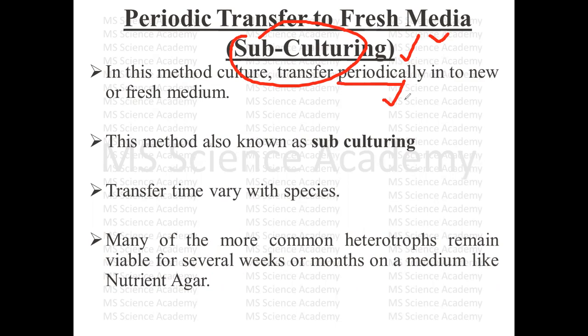For example, suppose the tendency of a bacteria in a specific media is about one month. So we have to transfer it to a fresh media within one month — where it can get a proper environment and be free from toxic products generated there. This process we call sub-culturing.